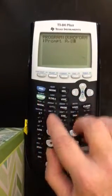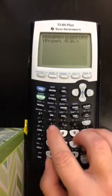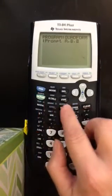So you're going to go alpha A, comma, alpha B, comma, see the commas are here above the 7, alpha C.